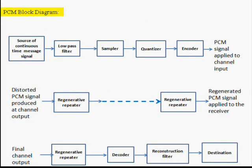The PCM process is divided into three steps: transmitter, regenerative repeater, and receiver. Initially, the input analog signal is given to an anti-aliasing filter, i.e. a low-pass filter, in order to satisfy the Nyquist criteria.